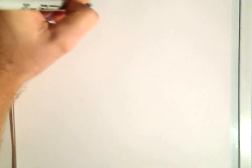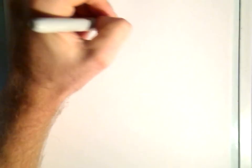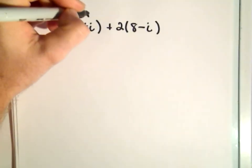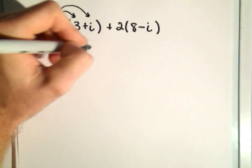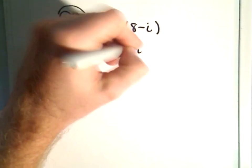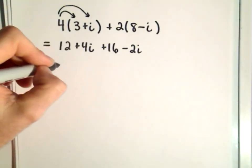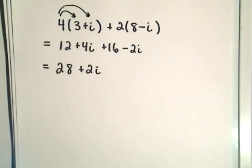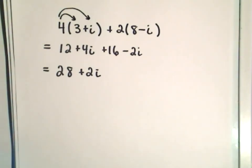Let's do one or two more. Suppose it was 3 plus i plus 2 times the quantity (8 minus i). We can just distribute: we'll get 12 plus 4i plus 16 minus 2i. Collecting like terms, 12 and 16 is 28, and then positive 2i. So adding and subtracting is pretty straightforward. In some other videos, I'll talk about multiplying and dividing.